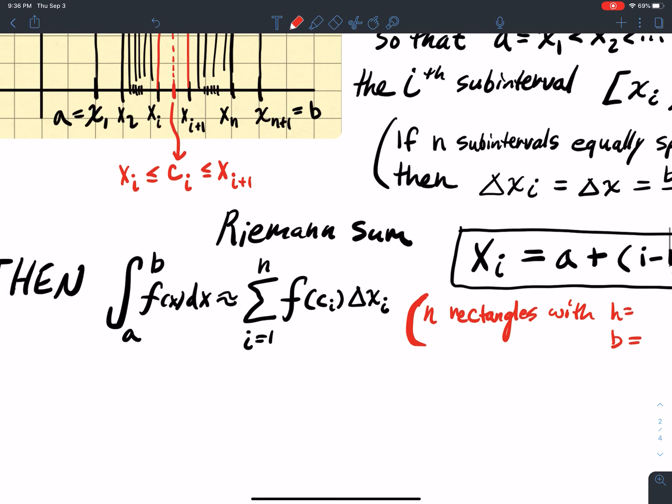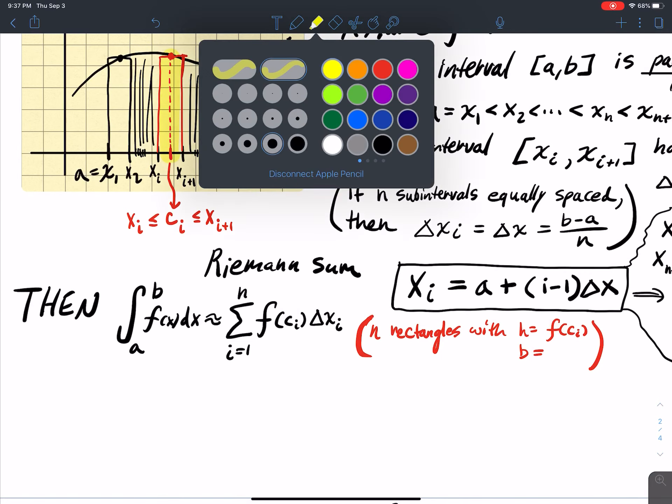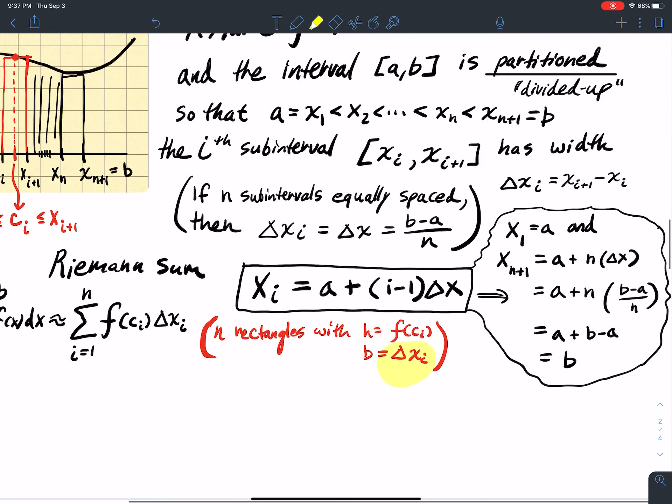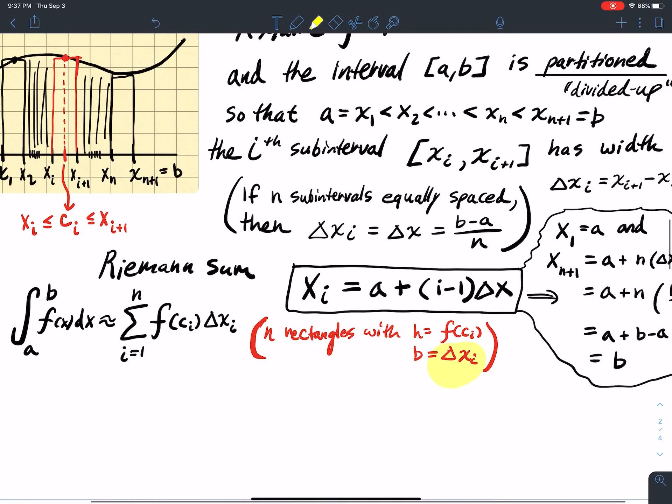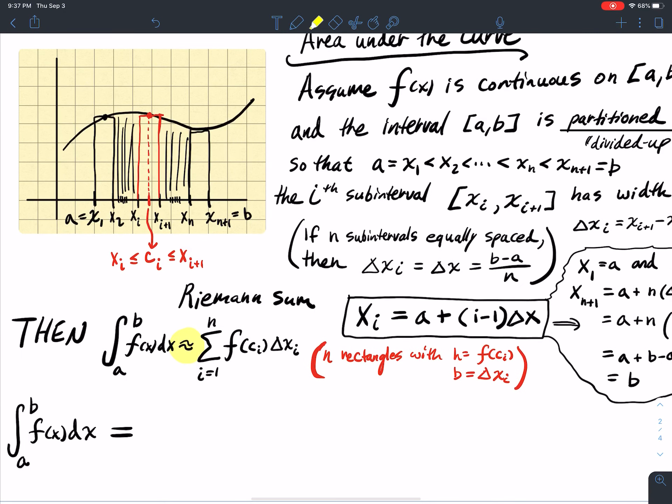So what does this say? I've got n rectangles, so an arbitrary number of rectangles, one, two, three, four, five, six, blah, blah, blah, n of them, n total rectangles, with heights equal to what? The function evaluated at that point, the height is f of c_i for that particular i-th interval, and with Δx sub i, where this is found by just taking the right endpoint minus the left subinterval endpoint. So right now what we have is this is approximately equal because n is finite. I have some fixed number of rectangles, maybe 20 rectangles.